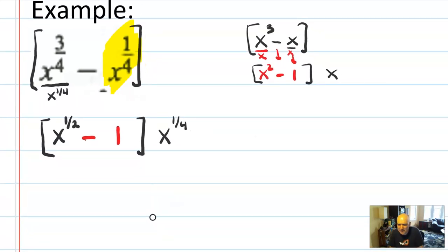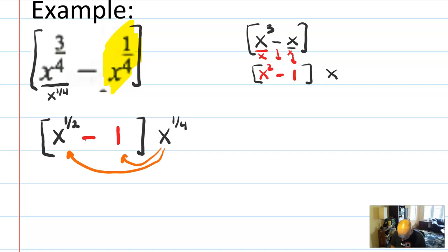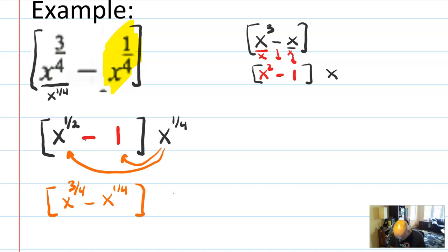It's a little weird — you have to be comfortable with rational exponents — but it's really just factoring like we've been doing for years. Just like regular factoring, you can check your work by multiplying everything back in. If you multiply x to the one-half times x to the one-fourth, you add the exponents, and you get x to the three-fourths minus 1 times x to the one-fourth, which is x to the one-fourth. So we got back the original — that's how you know a factoring procedure has worked.